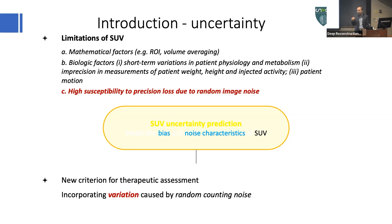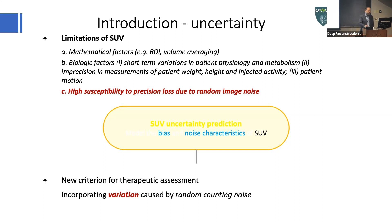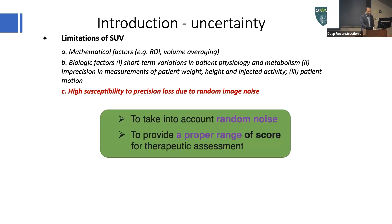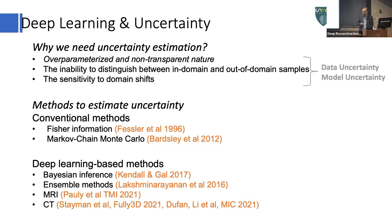But if you can somehow characterize the uncertainty using some mathematical skills, you can find that signal using a signal processing method. That's why we started looking at SUV, which is particularly useful when you think about SPECT imaging, which has more noise, and you want to look at the early treatment response of RPT, for example.